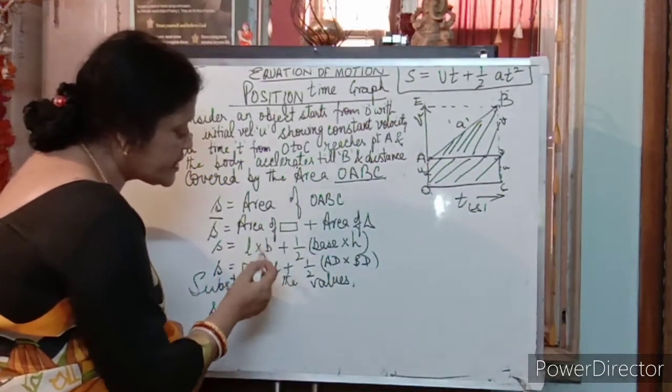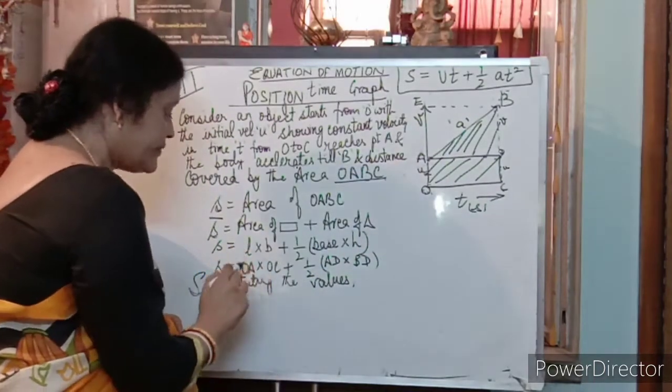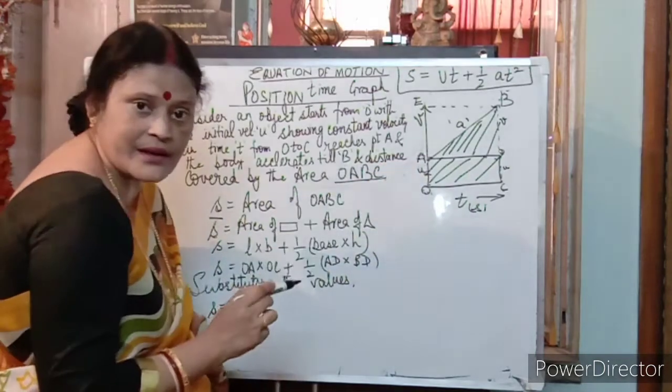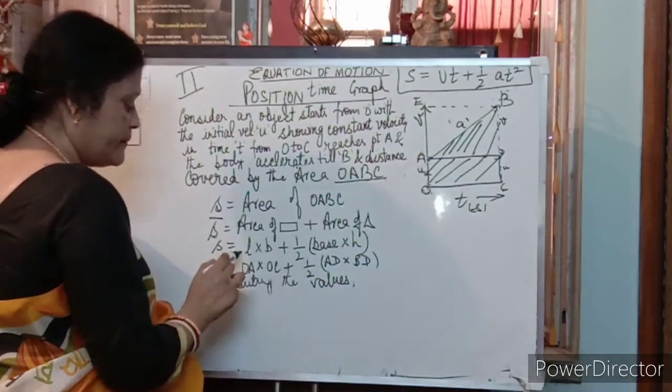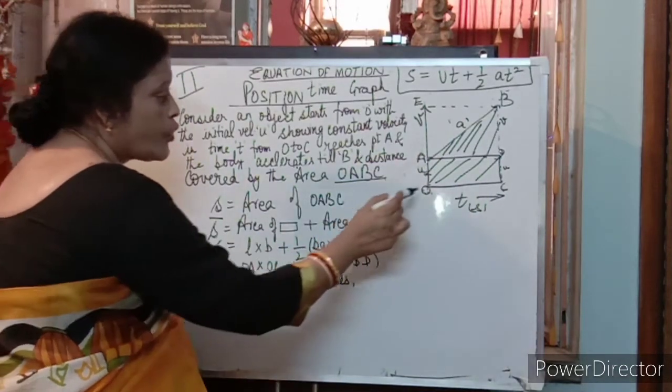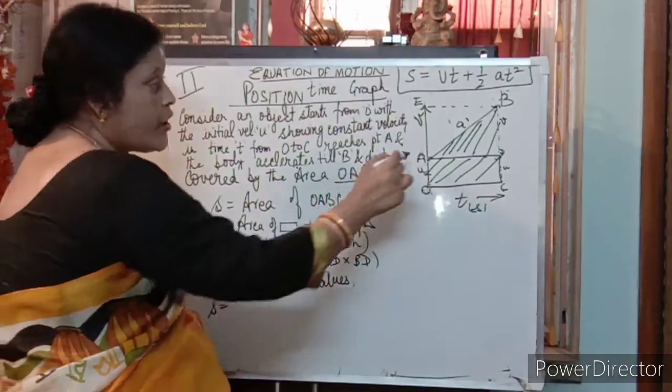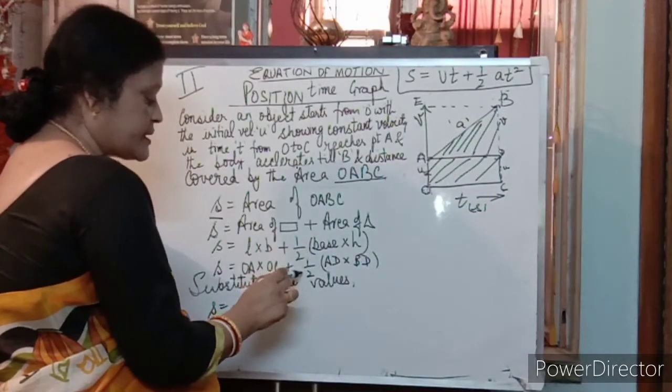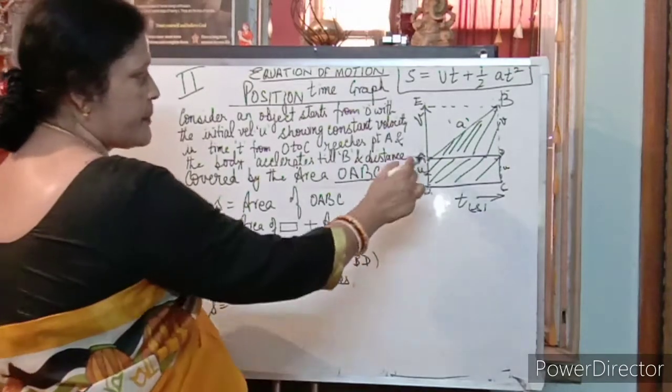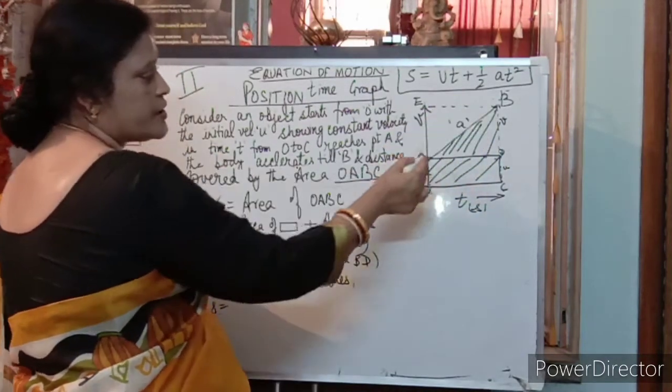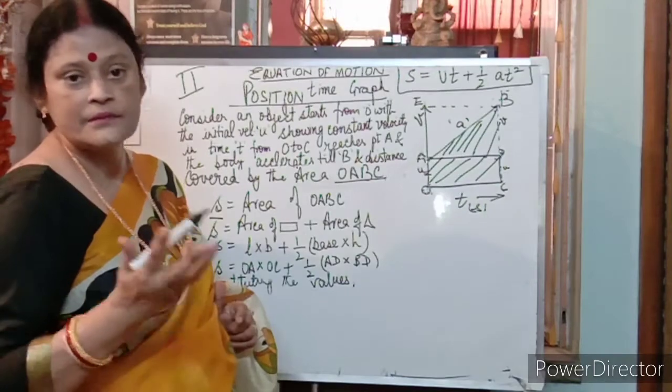Ab hum length ki jagah, ab inki jagah inki value wo likhenge. Yaha ka positions. Now, length ki aap ki O, A. Kya liya length he cover kaya? Rectangle ka pehle nikal lenge then triangle. Length he is covered O, A that is length into O, C. Yeh iski breadth he. Toh usne breadth aap ki O, C. Plus area of triangle. Area of triangle that is half base aap ka A, D le lenge. This is the base A, D. And height is this. This is not hypotenuse. So this is the height we will take that is equal to B, D.